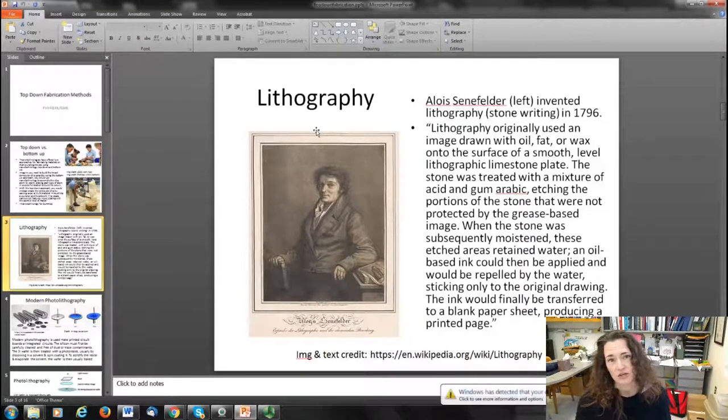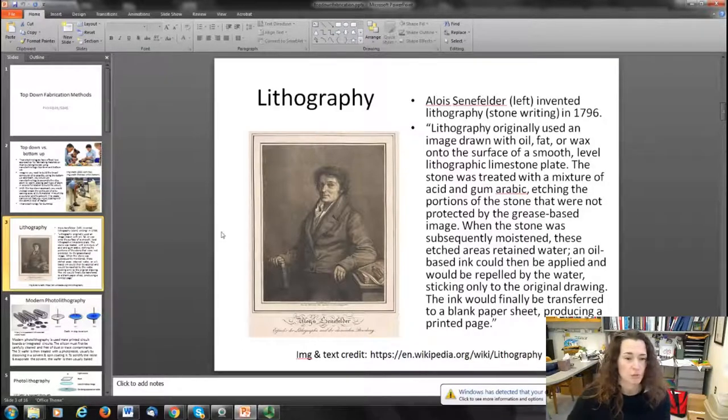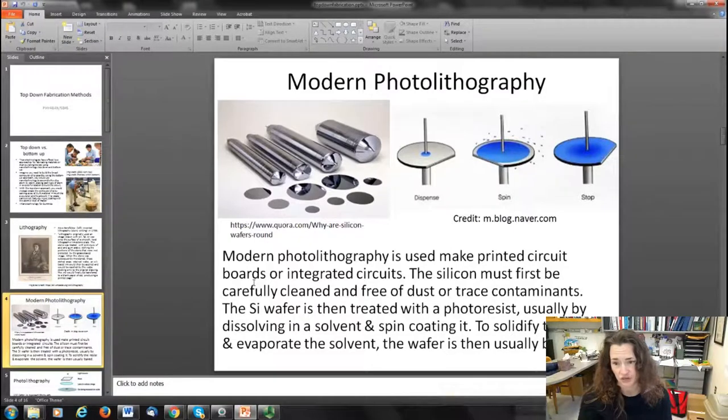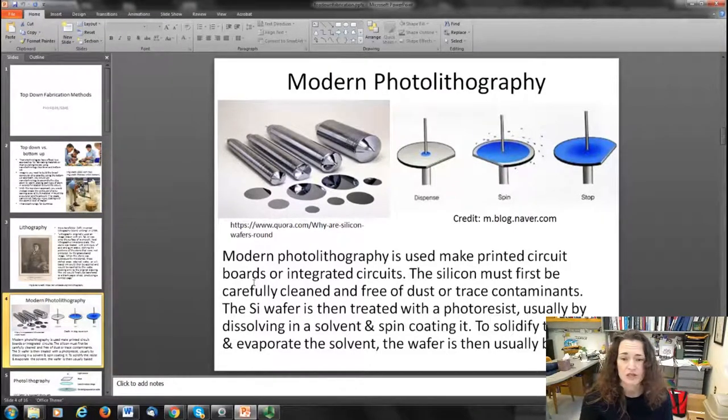Modern photolithography is used to make printed circuit boards or integrated circuits. They're made out of silicon, and the silicon must first be carefully cleaned and free of dust or trace contaminants. That means modern photolithography often takes place in clean rooms.